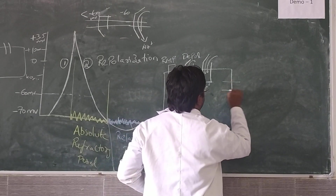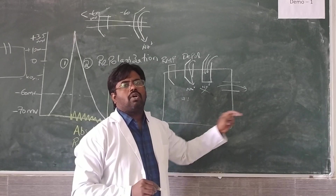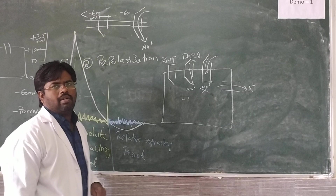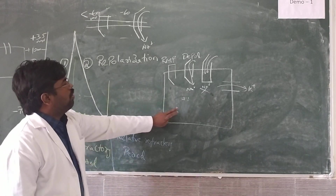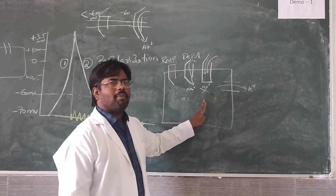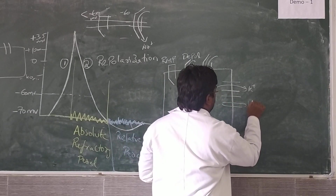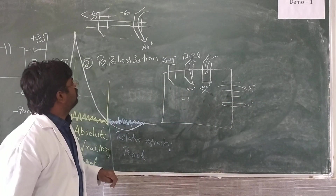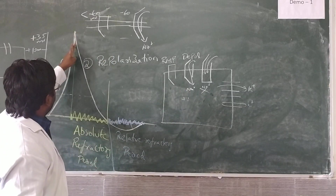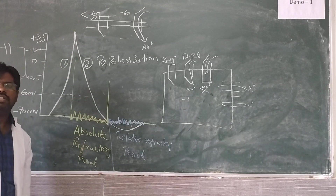At the same time, sodium ion entry is not possible. There is efflux of potassium ions. So what happens to the cell? The cell loses positivity slowly because there is no further incoming of sodium ions, and there is continuous leakage of potassium ions. This results in negativity of the cell.